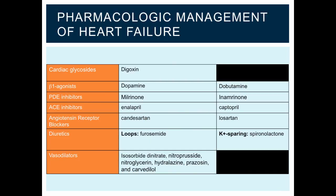As you can see from our drug chart, we have a wide array of agents from multiple pharmacologic classes, including cardiac glycosides such as digoxin, beta-1 agonists such as dopamine and dobutamine, phosphodiesterase inhibitors such as milrinone and enamrinone, ACE inhibitors such as enalapril and captopril, angiotensin receptor blockers such as candesartan and losartan, diuretics such as loop diuretics like furosemide and potassium-sparing diuretics such as spironolactone, as well as a whole host of vasodilators.